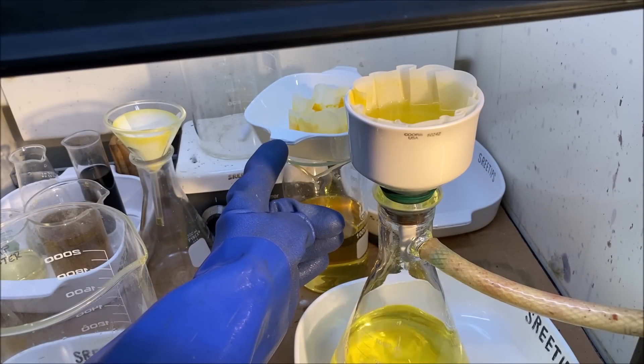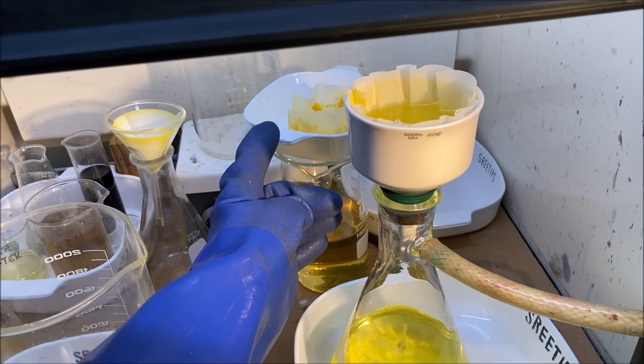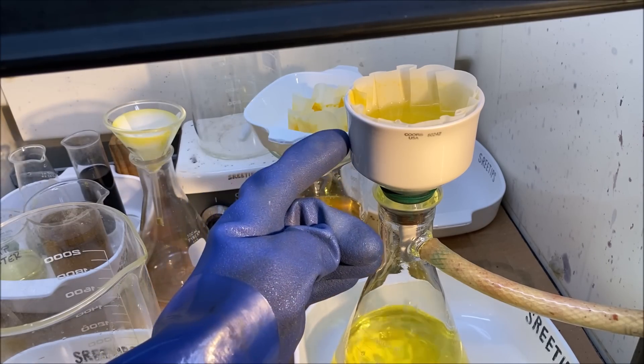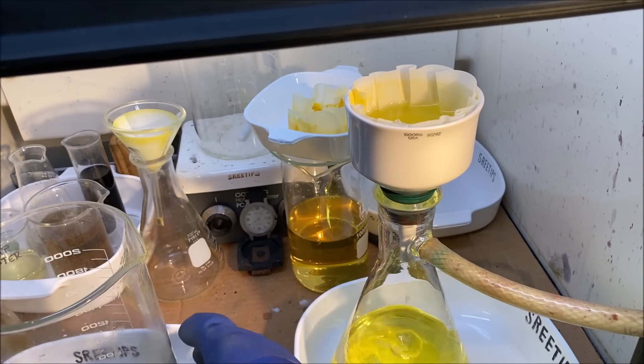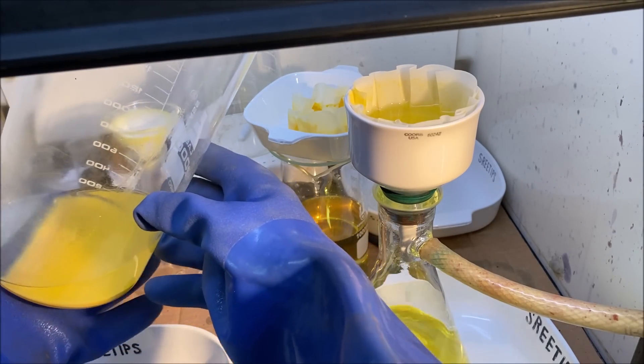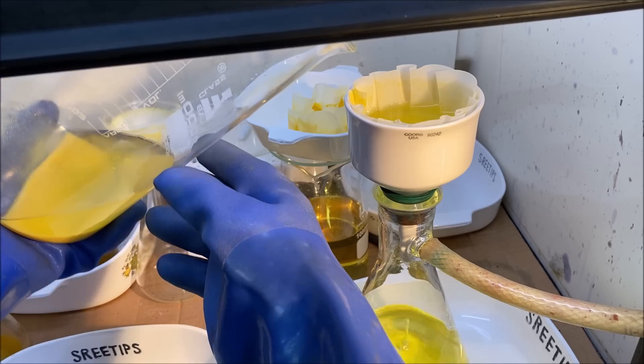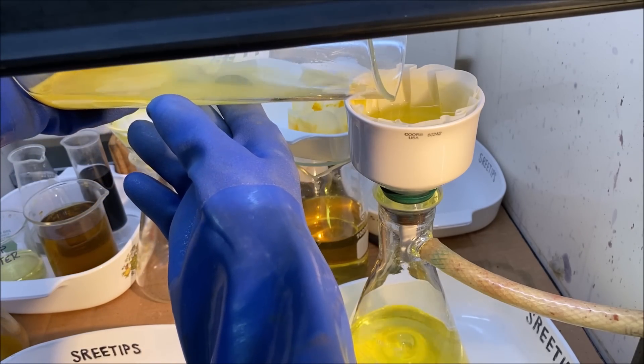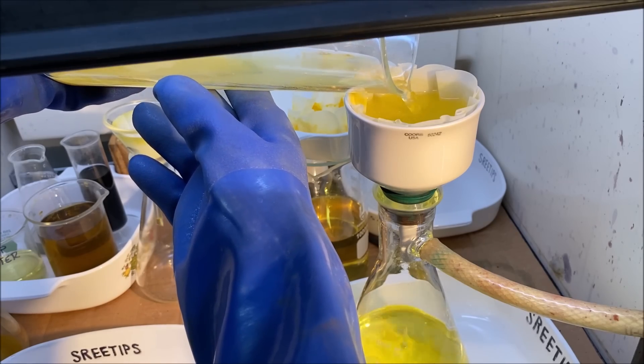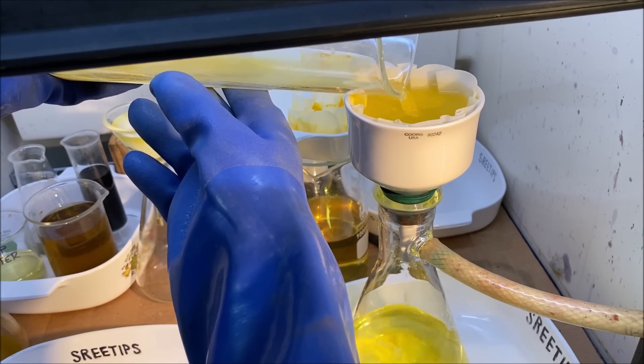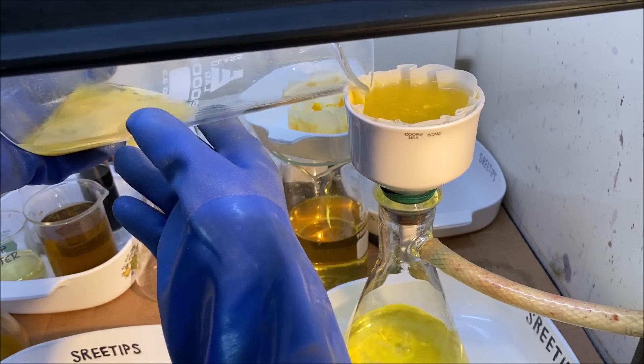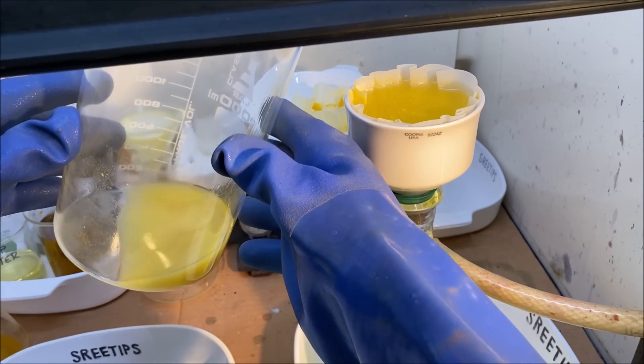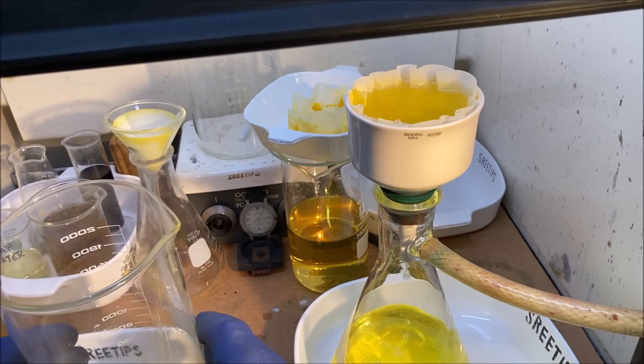I moved the ammonium hexachloroplatinate cake back out of the way. I set up another filter. Now I'm filtering out this little bit of ammonium hexachloroplatinate so that we can burn everything in part 7. So this will conclude part 6 of the Platinum Jewelry Refining Series of Videos. Thank you for watching.